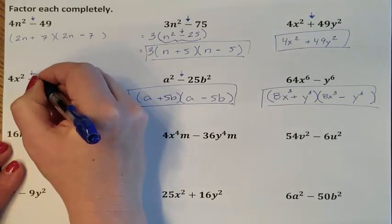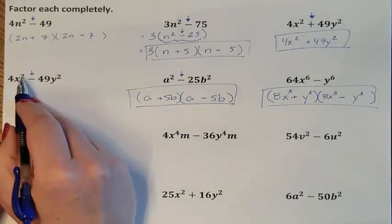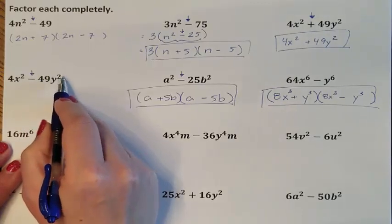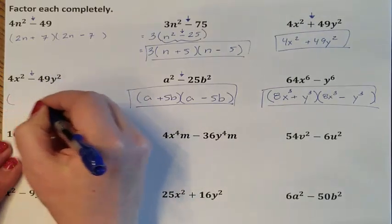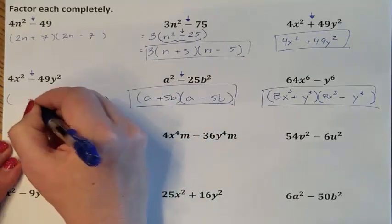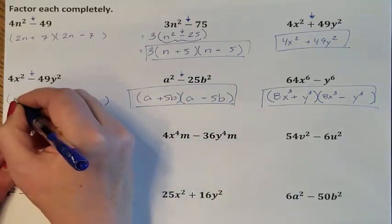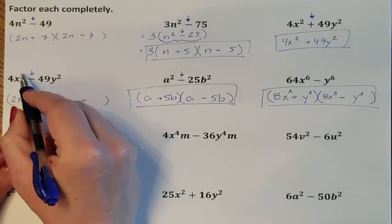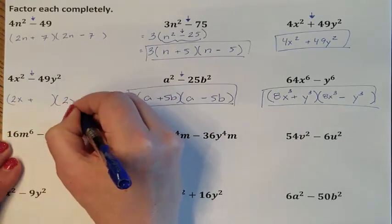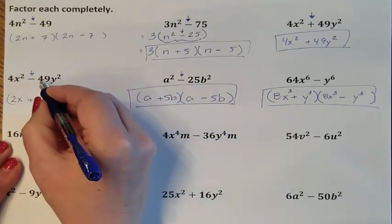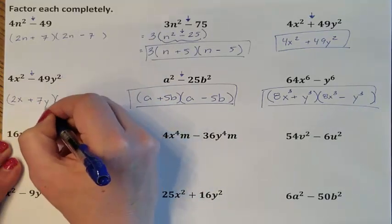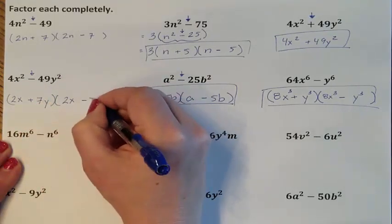It is subtraction. I can square root 4. I can divide that exponent by 2. I can square root 49. I can divide this exponent by 2. So here are my difference of two squares. The square root of 4 is 2. Looking at the x's, 2 divided by 2 is 1, so my front terms are 2x's. The square root of 49 is 7. Exponent 2 divided by 2 is 1, so my back term is just 7y.